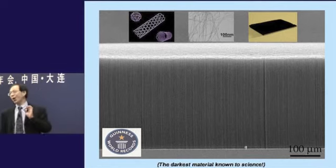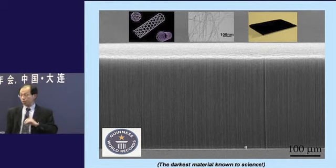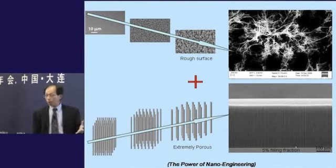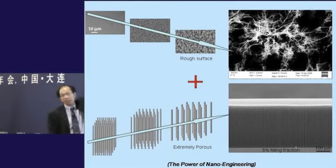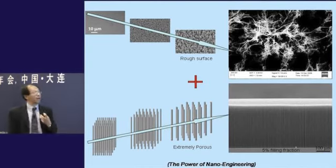We got freedoms here in engineering nanomaterials by making the materials more and more porous, and also we make the surface, that's another freedom, more and more rough. Combining them, we can trap the light very well and create the darkest materials.